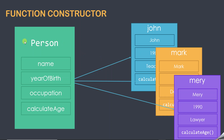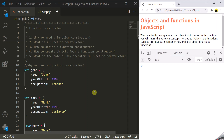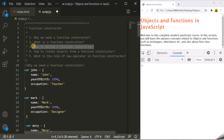So this Person function constructor is acting as a blueprint for these three objects. And since John, Mark and Mary objects are created from this Person function constructor, you can say that John, Mark and Mary are actually instances of this Person function constructor. So enough theory — let's understand function constructors with a practical example and answer our third question: how to define a function constructor.